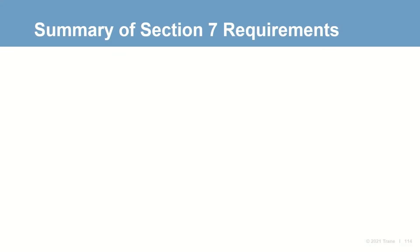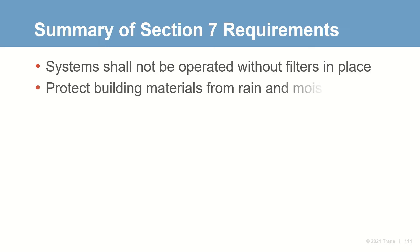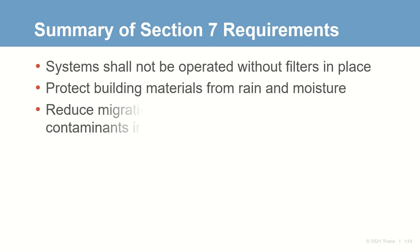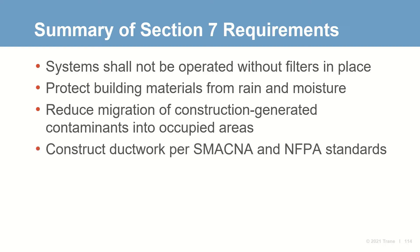During construction activity, Section 7 states that the ventilation system shall not be operated without its filter in place. It also requires you to protect building materials from rain and moisture, reduce migration of construction-generated contaminants into occupied areas, and construct ductwork per SMACNA and NFPA standards.